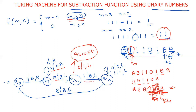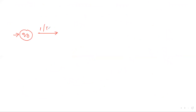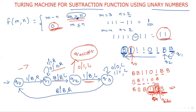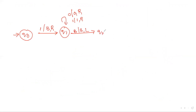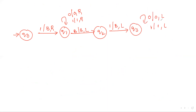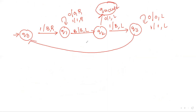Now we also need to handle m less than n and m equal to n. Let me read out the diagram: q0 reads 1, replaces with blank; q1 reads 1 replace with 1 right, reads 0 replace with 0 right, reads blank replace with blank left; q2 reads 1 replace with blank left; q3 reads 0 replace with 0 left, 1 replace with 1 left; q_accept — from q3 blank is replaced with blank right. This is the diagram for m greater than n.